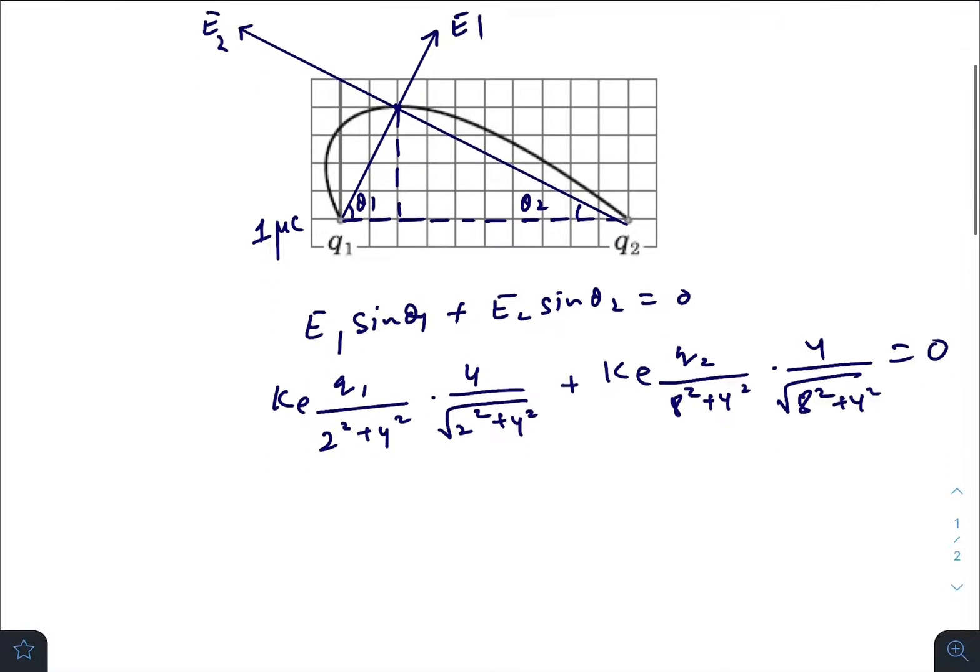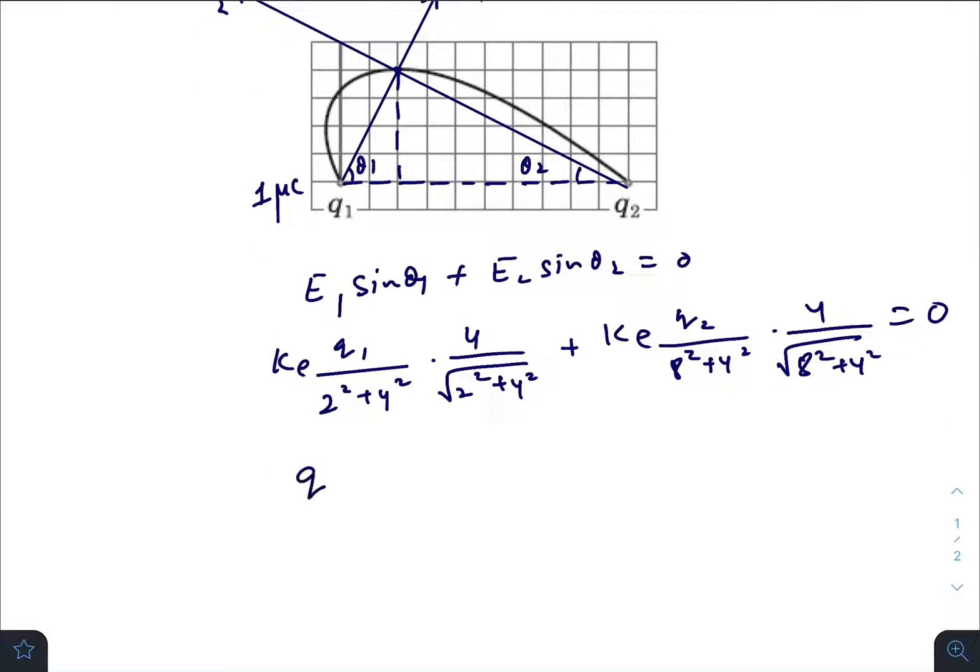So ke gets cancelled out, q2 is negative q1, 4 also gets cancelled out. It gives you 4, this one is 20, this one is 64 plus 16, that is 80.